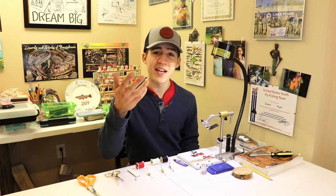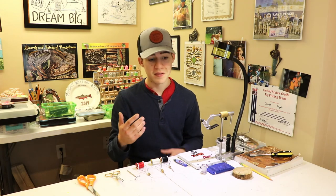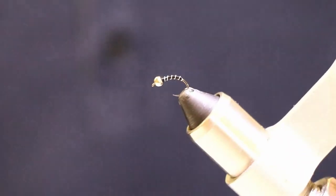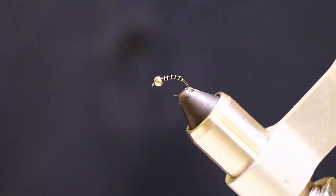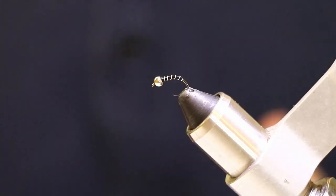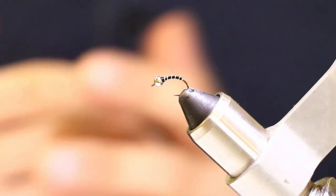So the fly that has been working for us over here, which is not really a secret, is the zebra midge. This fly is simple and it works. That's what I like. It's simple and it works. You can crank these flies out so quickly when you start practicing tying these flies.